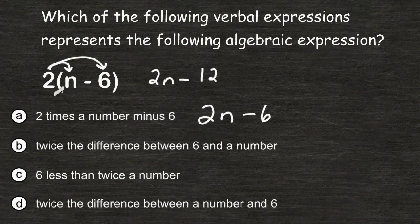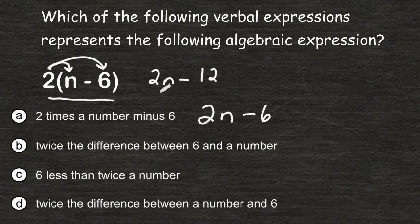So the given algebraic expression is really equivalent to 2n minus 12, or 2 times a number minus 12, not 2 times a number minus 6.